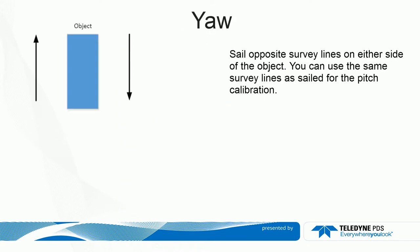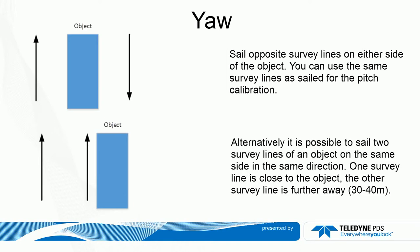For yaw calibration, sail opposite survey lines on either side of the object, for example a seawall — these are the same lines as used for the pitch calibration. Alternatively, it is possible to sail two survey lines on the same side and in the same direction of an object: one survey line close to the object, the other survey line further away, 30 to 40 meters.